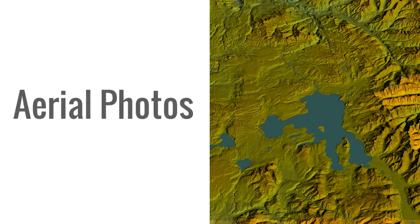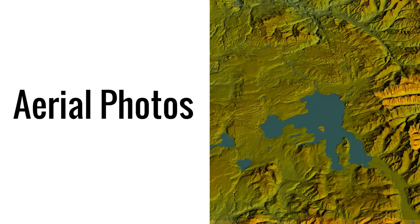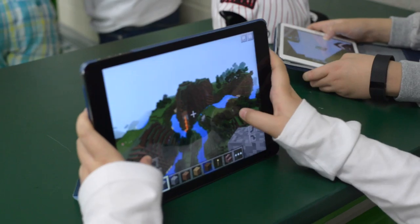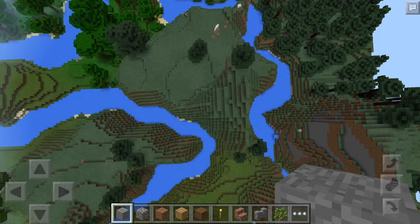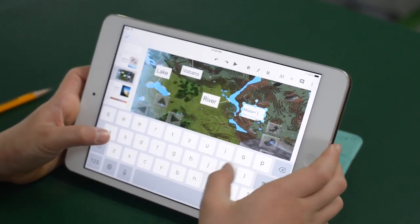The first part of the survey were the aerial photos, which are usually captured by air or spacecraft so that geologists can map out the region and also study its features. Here are the directions that were given. For our aerial photos, students used Minecraft Pocket Edition in creative mode to fly and take screenshots on their iPads. They labeled the landforms and bodies of water on their aerial photos using Google Slides.